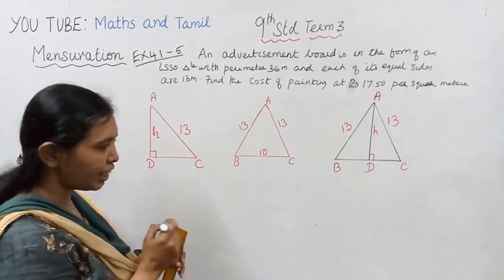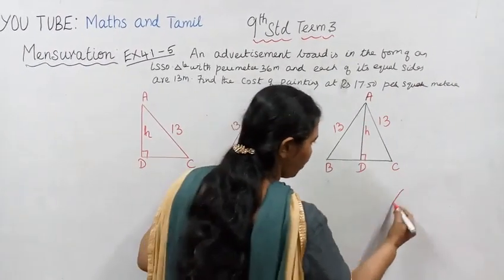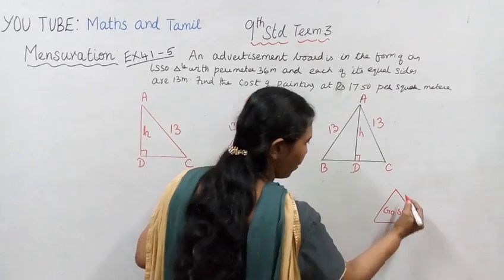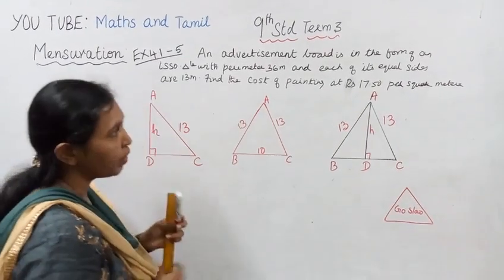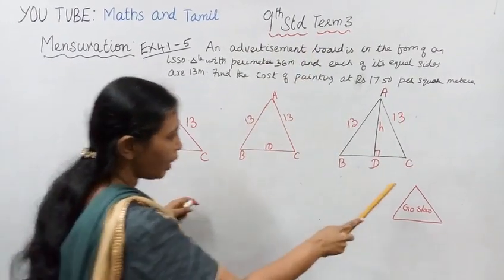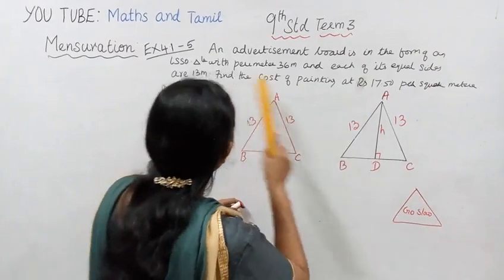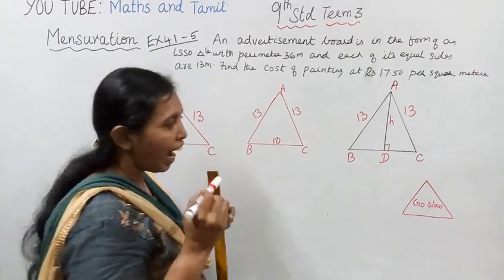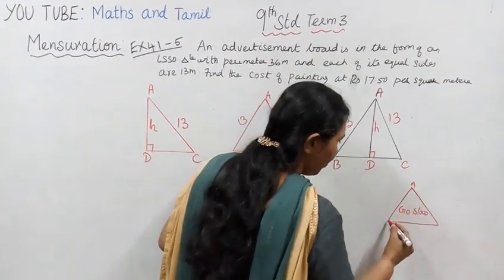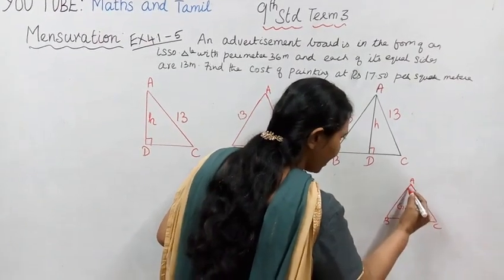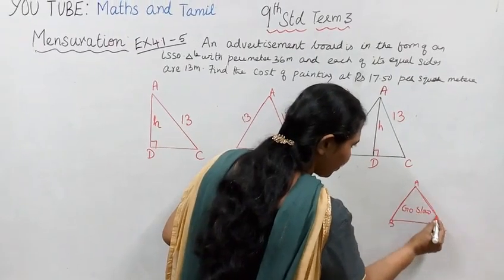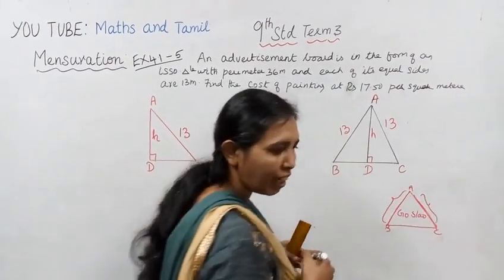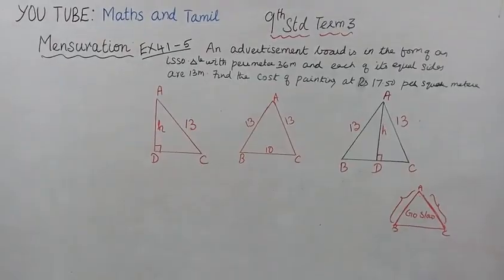The advertisement board is in the form of an isosceles triangle. In an isosceles triangle, two sides are equal. Label the triangle A, B, C — sides AB and AC are the two equal sides. So AB and AC are equal — that is the isosceles triangle.